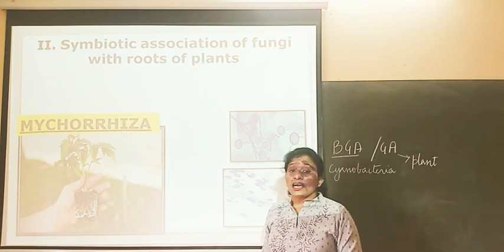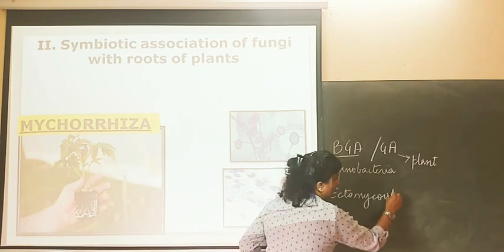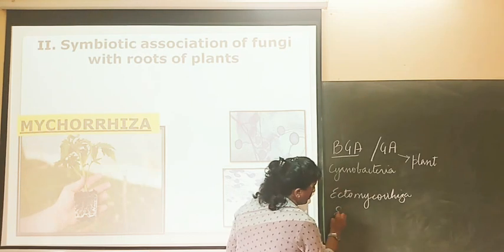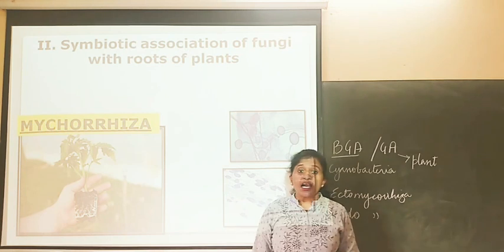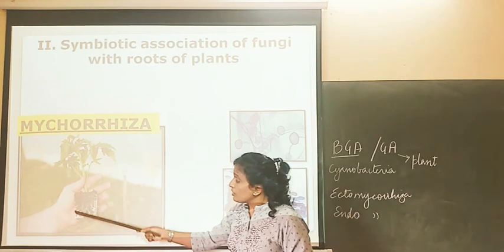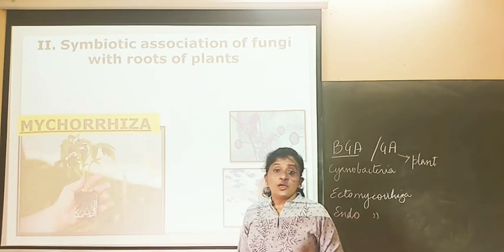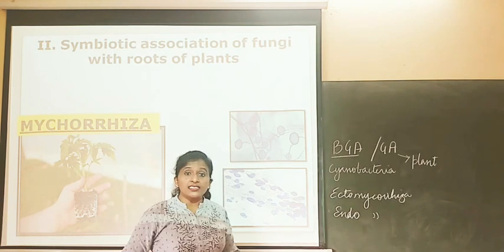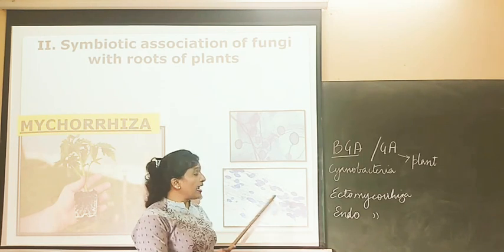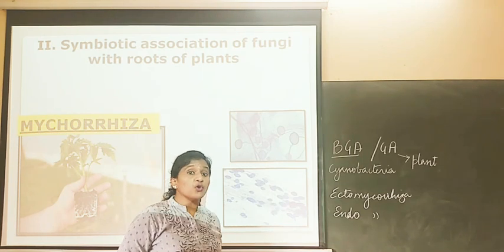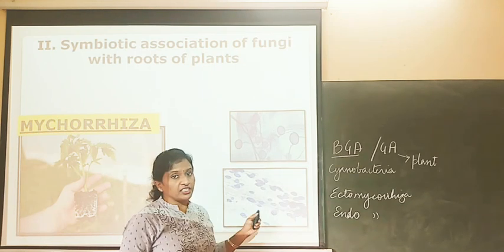Mycorrhiza can be of two kinds: ectomycorrhiza or endomycorrhiza. Ectomycorrhiza are those fungal species which form woolly outgrowth around the roots externally. Whereas endomycorrhiza are those species which enter or infect the roots and produce spores inside the roots, especially in the cortical region of the roots.